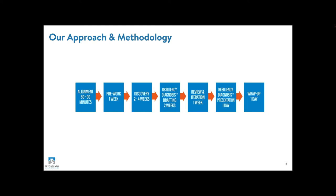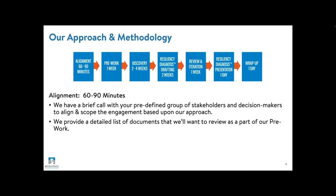Once we've come to agreement on doing the resiliency diagnosis for your company, we start with alignment. We have a brief 60 to 90 minute call with you and your predefined group of stakeholders and decision makers. The purpose is to align and scope the engagement based upon our approach. We come out of this understanding who you want us to meet with, a little bit about the current state of your program, and we provide you with a detailed list of documents we're going to want to see and review as part of our pre-work.